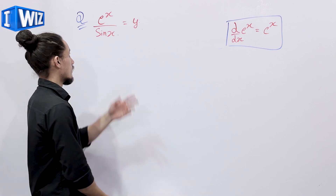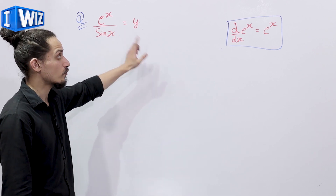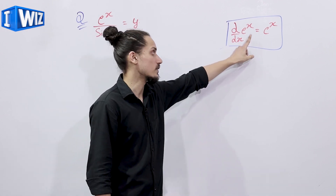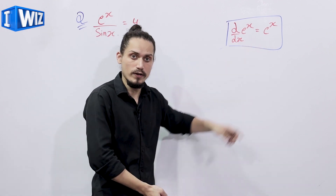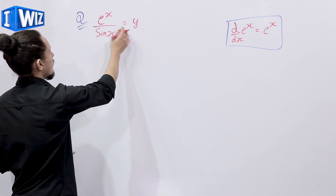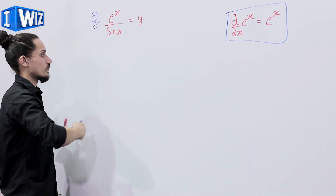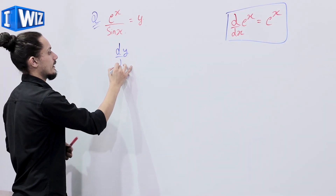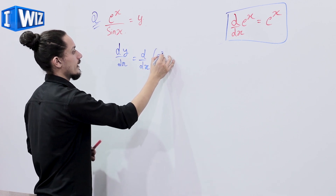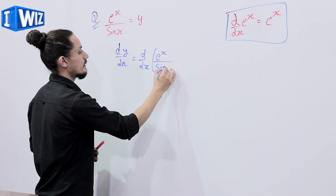Now we'll solve a function involving the exponential function and find its derivative. Note that the derivative of a natural exponential function is again the exponential function. We have y = e^x divided by sin x, so dy/dx will be equal to d/dx of e^x divided by sin x.